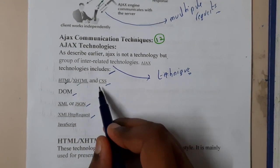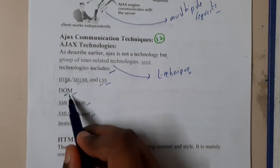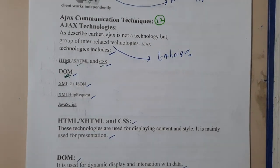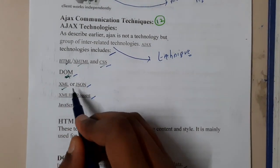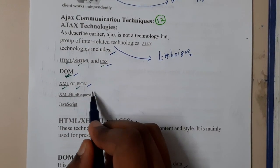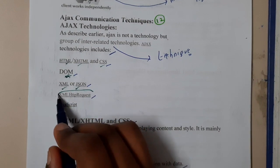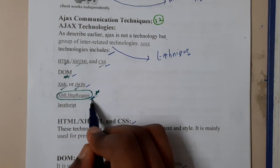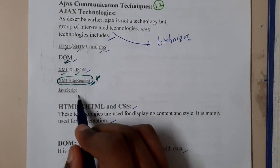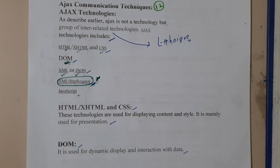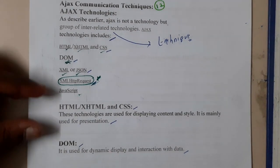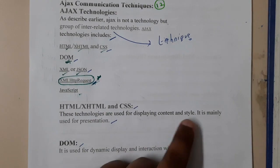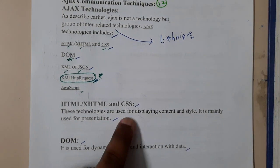AJAX consists of HTML or XHTML, CSS, DOM — that is nothing but Document Object Model — which we discussed, XML, JSON, and XMLHttpRequest. Please remember this because we'll be discussing it in our next lecture. JavaScript is used for the display of content and styling of the website.